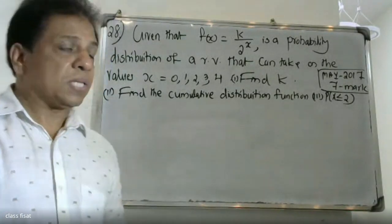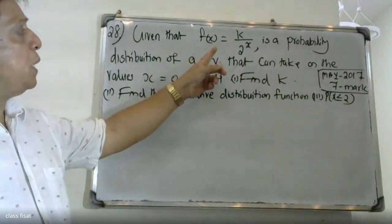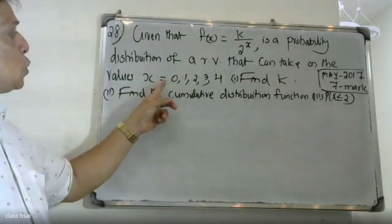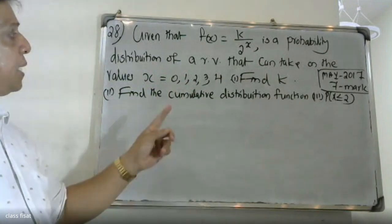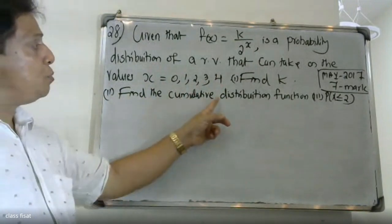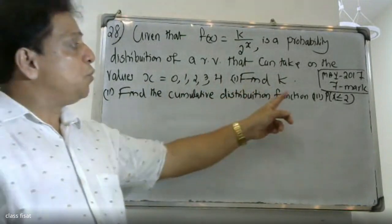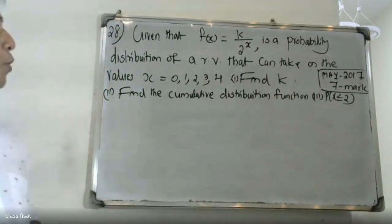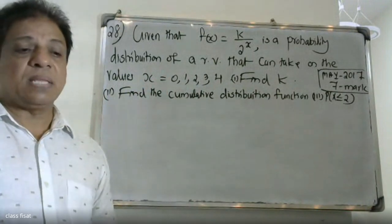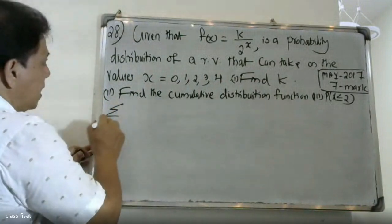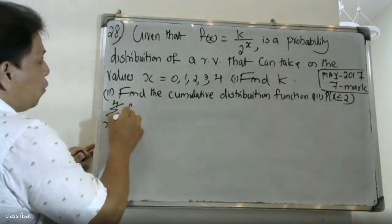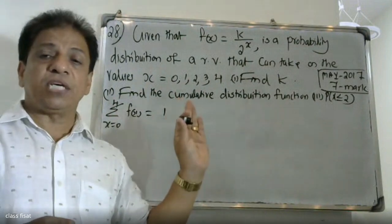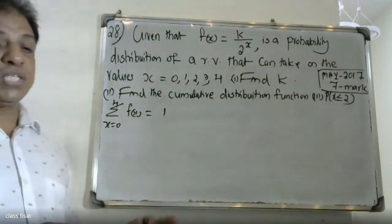Good morning students. Given that f of x equal to k times 2 raised to x is a probability distribution of a random variable that can take the values x equal to 0, 1, 2, 3, 4. Find the value of k, find the cumulative distribution function, and find the probability of x less than or equal to 2. Using the basic principle for discrete probability distribution: sigma x equal 0 to 4, f of x is equal to 1.